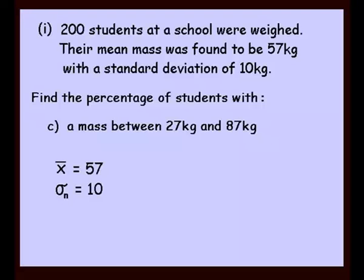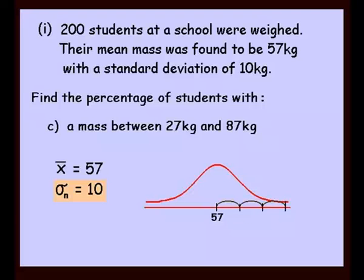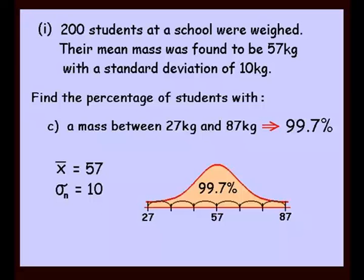Question C: the mass required is between 27 and 87 kilos. Drawing a new bell curve with 57 in the middle, standard deviation 10. Going up three lots of 10 takes us to 87; going down three lots of 10 takes us to 27 — which corresponds with what we're being asked. Three standard deviations each way indicates 99.7%, so 99.7% of students would have a weight somewhere between 27 and 87 kilos.